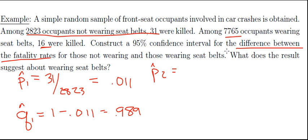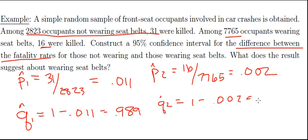And then p-hat 2, that's going to be the proportion from the second group. So 16 out of the 765. So that's going to be equal to 0.002. And so q-hat 2 is equal to 1 minus 0.002. And that's 0.998.